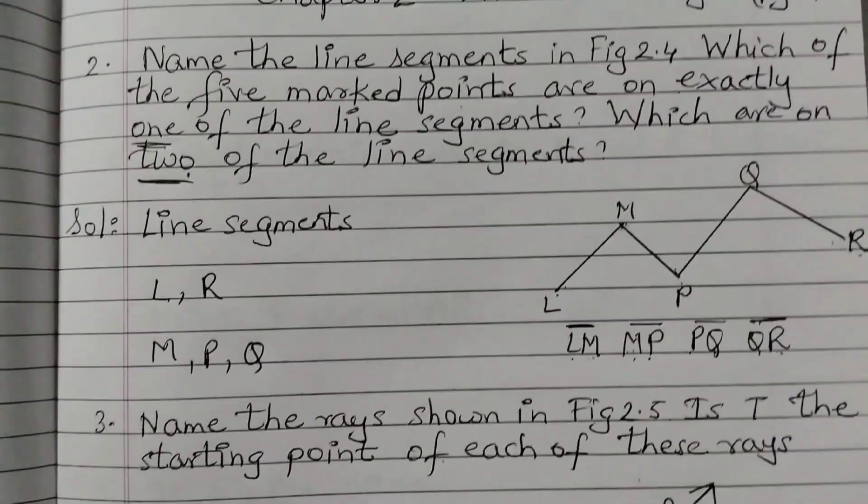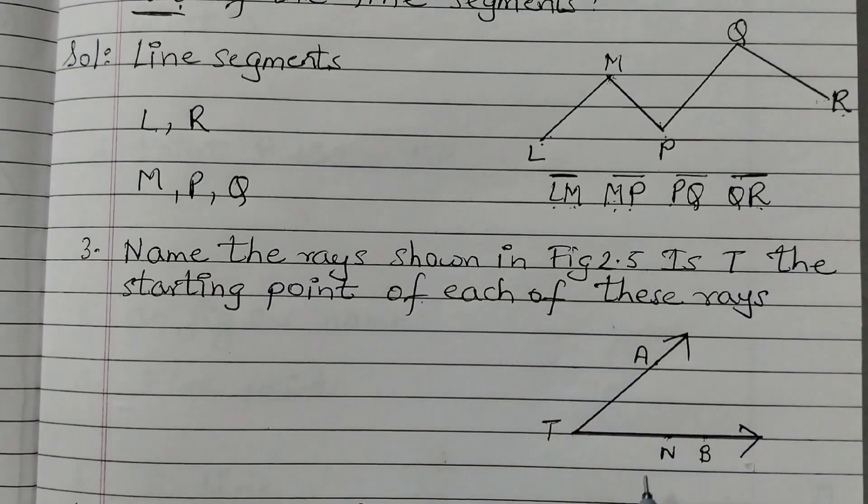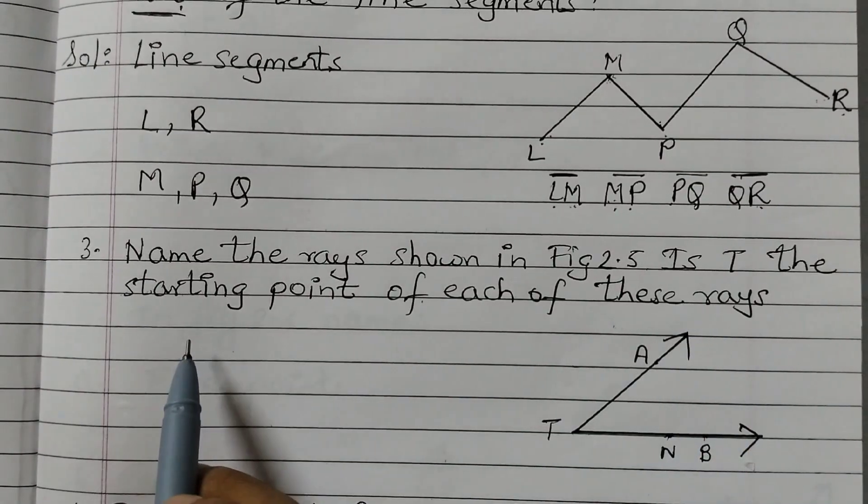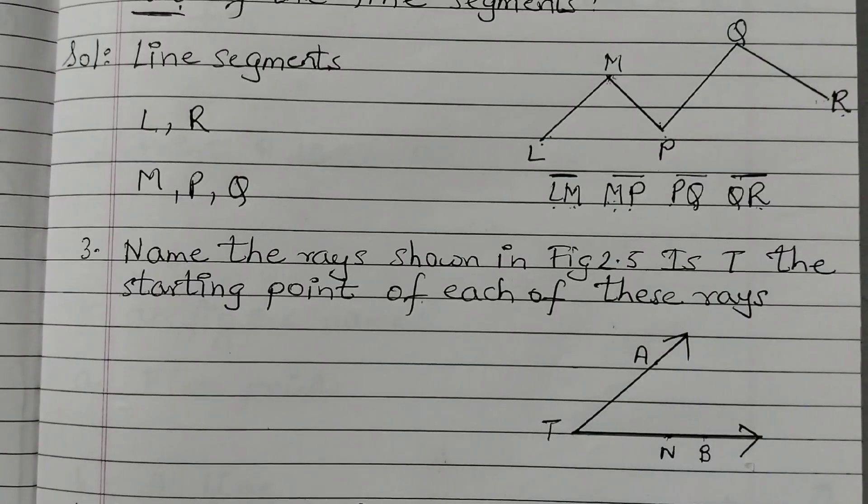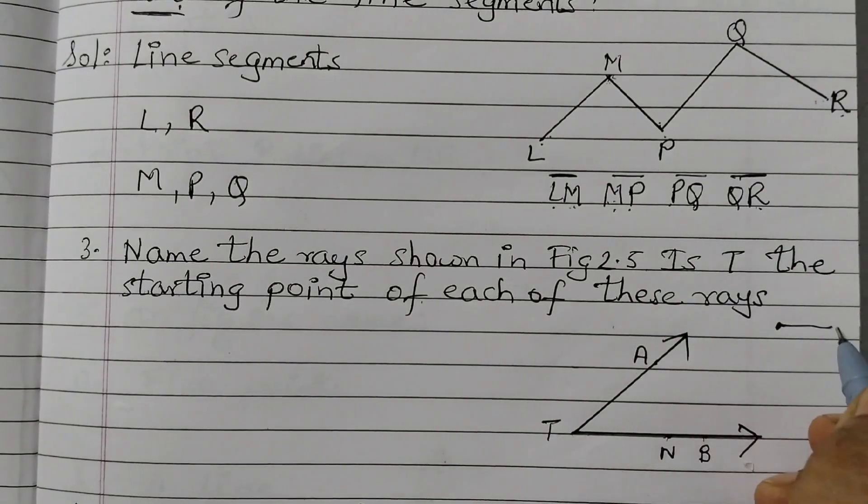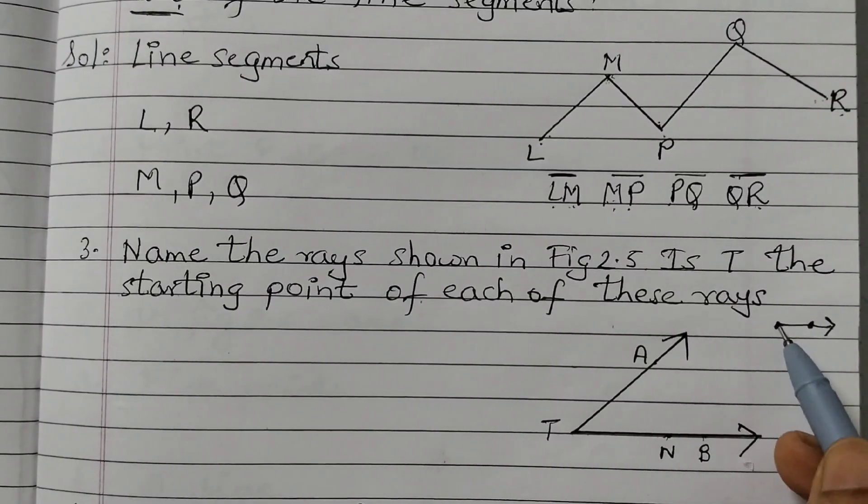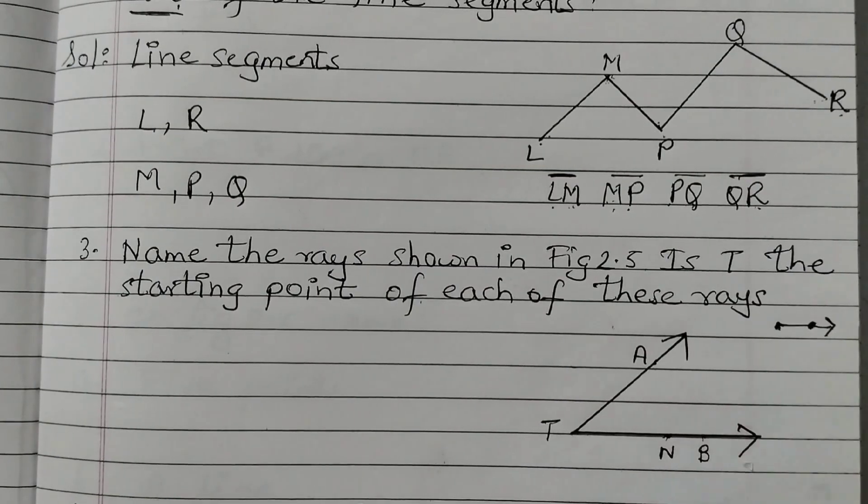Moving on to question number 3. Name the rays shown in figure 2.5. This is figure 2.5 in the textbook. Is T the starting point of each of these rays? Now the definition of rays is that it has a starting point and the other point would be anywhere on the path of the ray. So this is the starting point and it moves forever to one direction and it will have one point. It can have more than one points also on the same path.